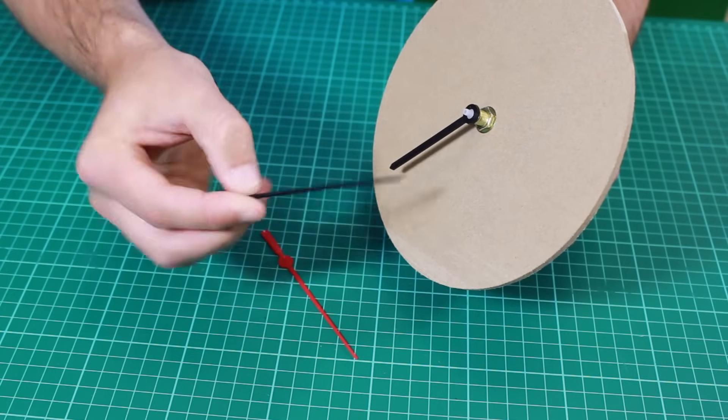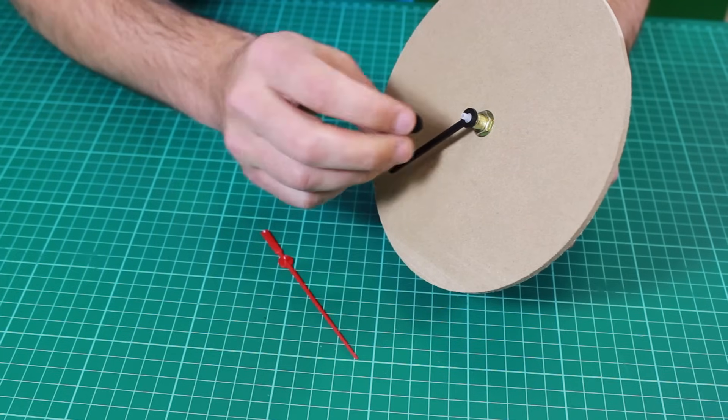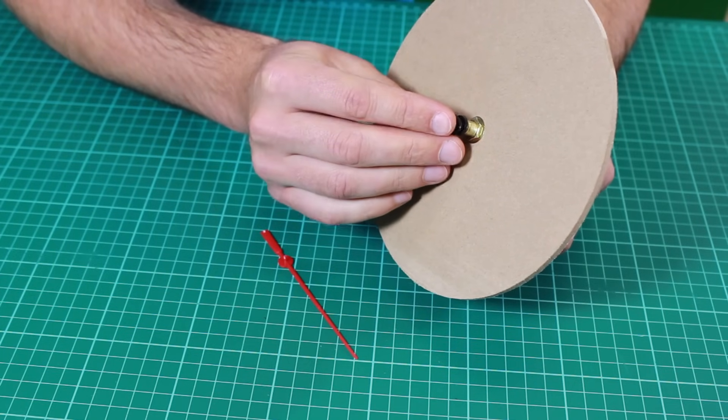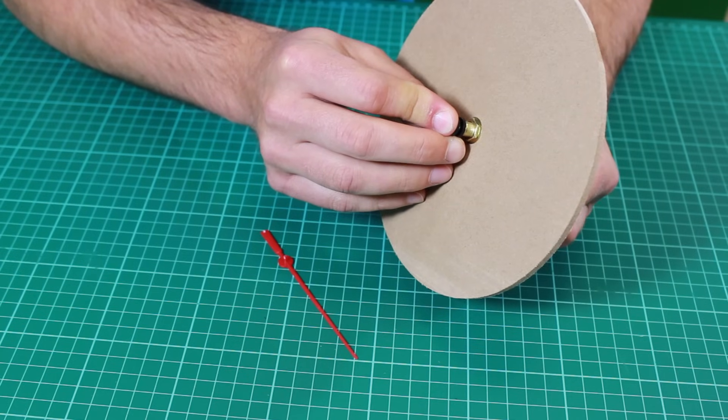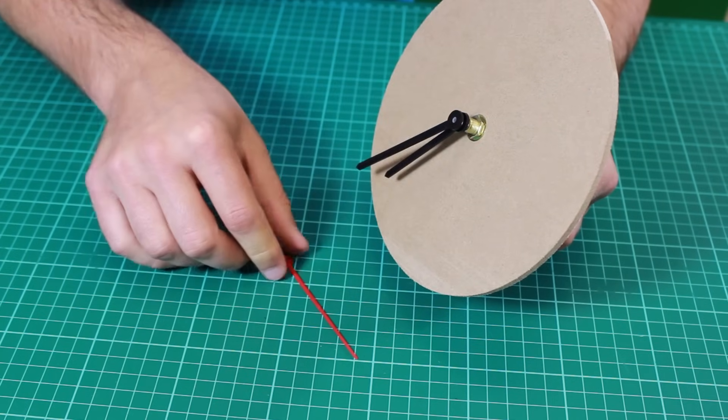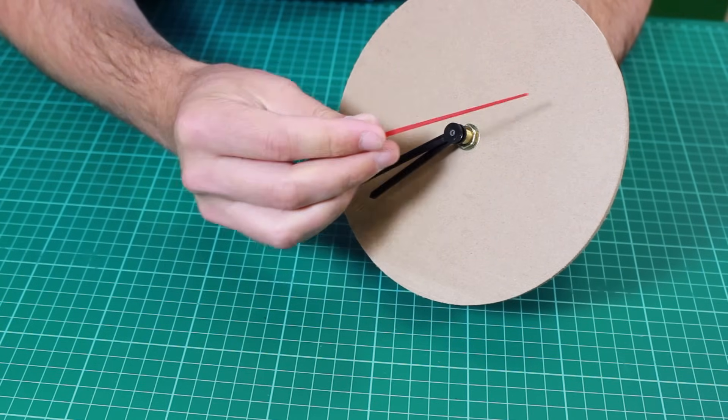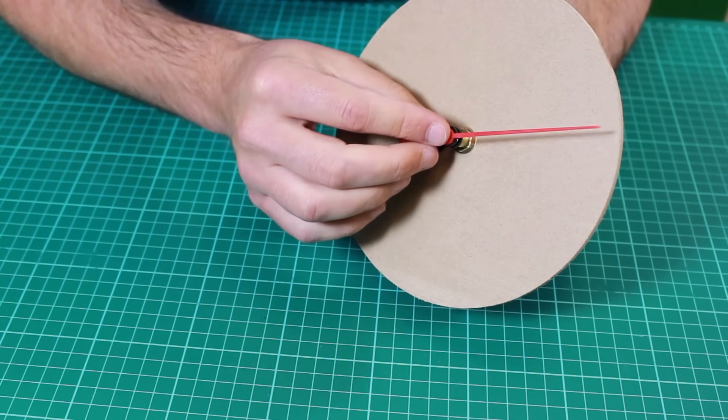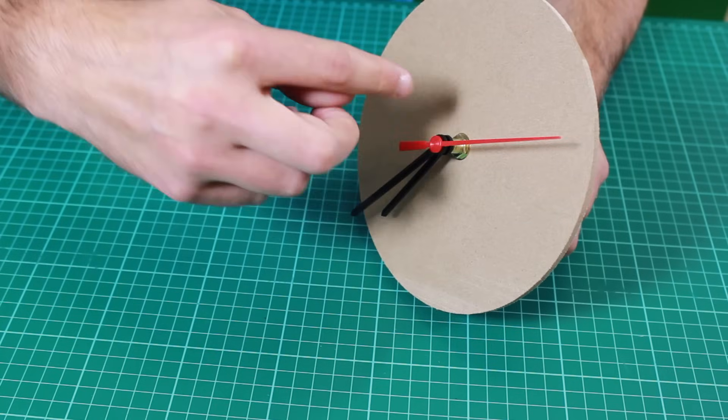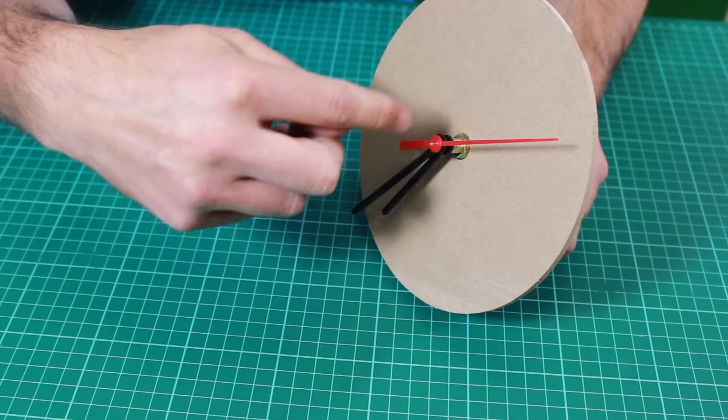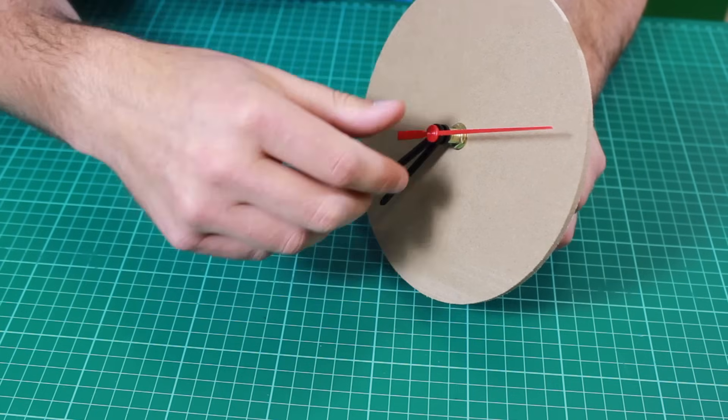Then we take the minute hand, which is a slightly smaller hole. This goes onto the next plastic tube, which is slightly smaller. And lastly, we take the second hand. This goes onto a central pin that sits in the middle. So what happens is the pin and the two plastic tubes are concentric to each other and can move around.